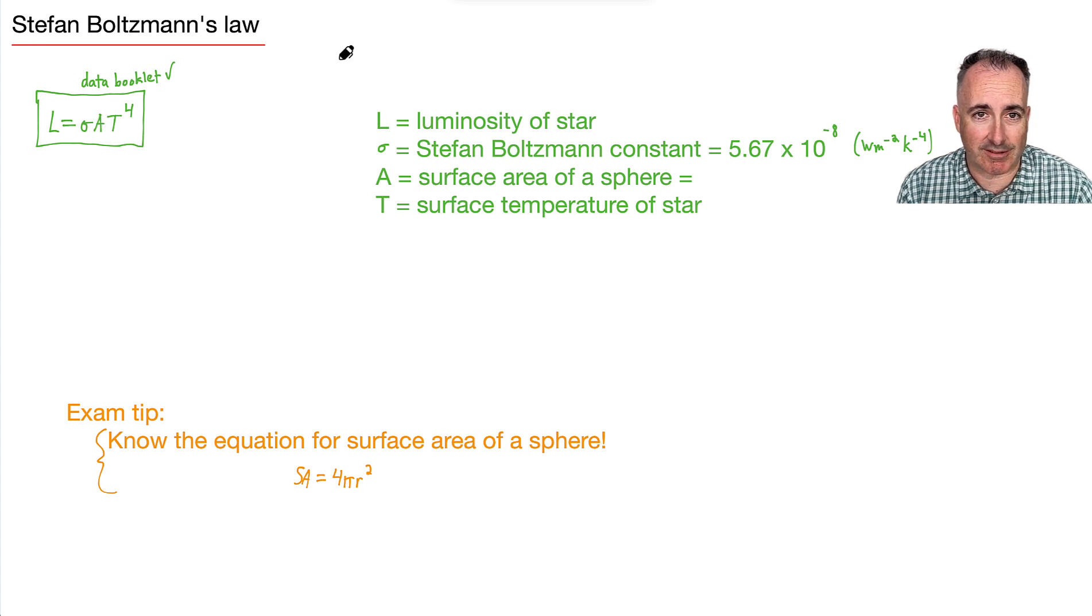Why? Well, because that's this A here. In other words, this A right here, that's in this equation, that's a surface area of a sphere, which is 4 pi r squared. Keep in mind, it's going to be in meters squared. That's going to be the units. What's the luminosity of a star again? Oh yeah, that's in watts.